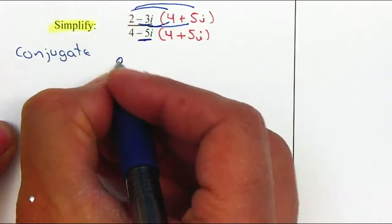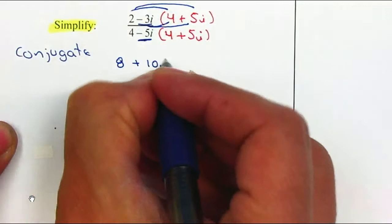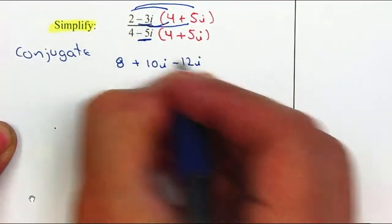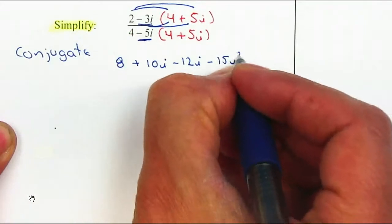2 times 4 gives 8. 2 times 5i gives 10i. Negative 3i times 4 is negative 12i. Negative 3i times 5i is negative 15i².